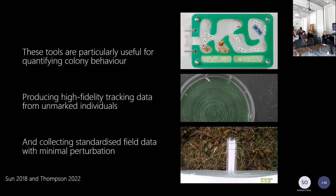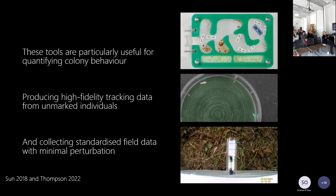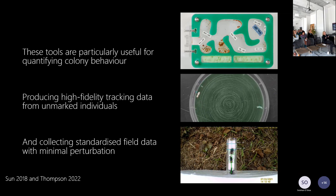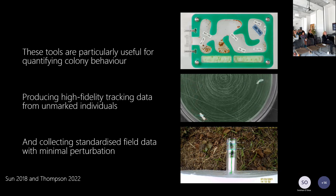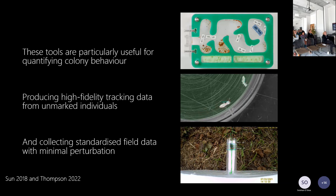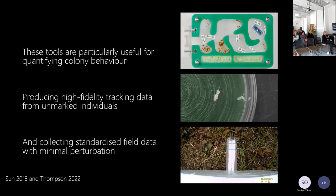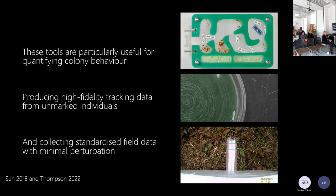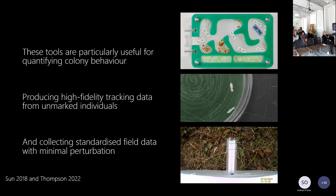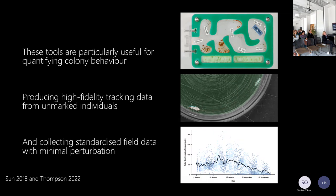We had around 36 colonies and wanted to see how foraging activity changed over time. Instead of paying a lot of money for a laser-based entrance counter system, we managed to buy a load of cheap cameras — about 72 of them — stick them on all the colonies, and then use AI software to automatically count individuals going in and out without having to touch them, do anything, or be there for visual observation. You can then produce really nice rich data sets from that.